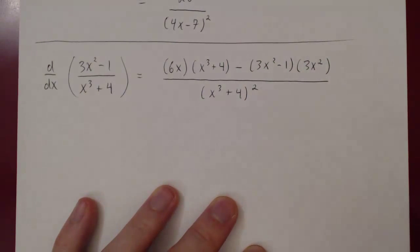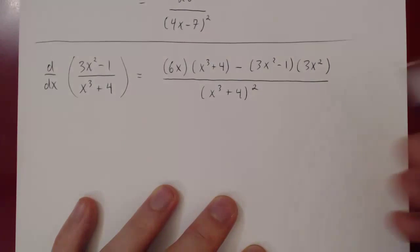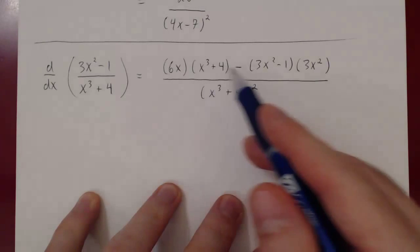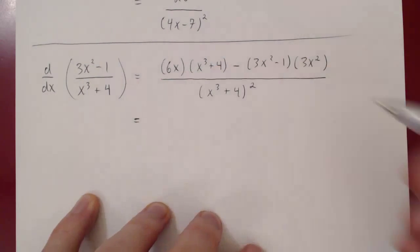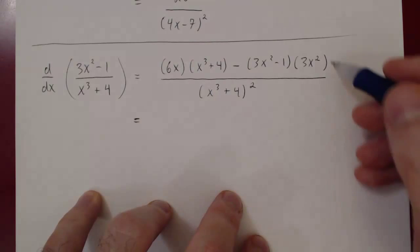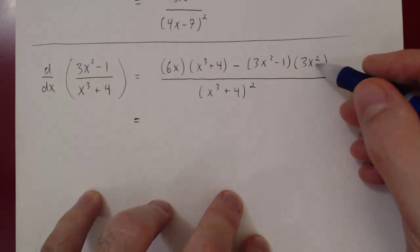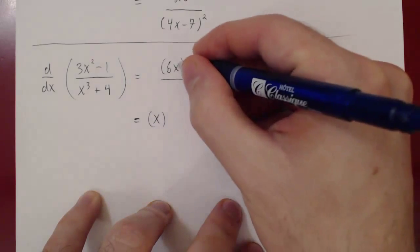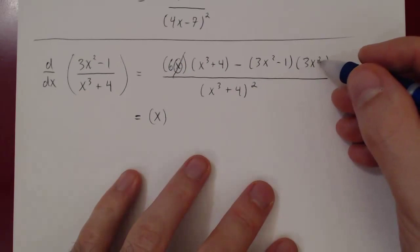We're done with the quotient rule step — the rest is just simplifying the expression. Before multiplying things out, let's look for common factors. There's a factor of x in the first term and in the second term. We can pull one out. So we factor out x — we have two x's here, giving x squared; if we take away one, we're left with x.